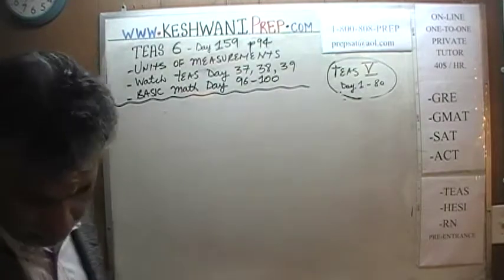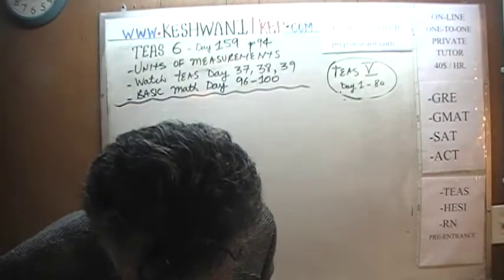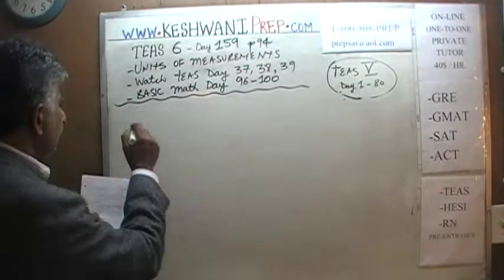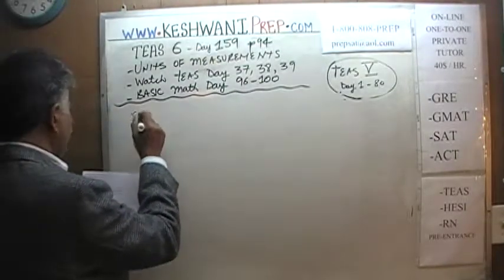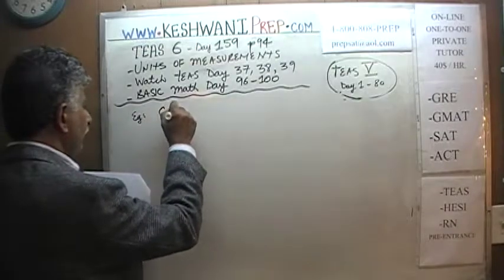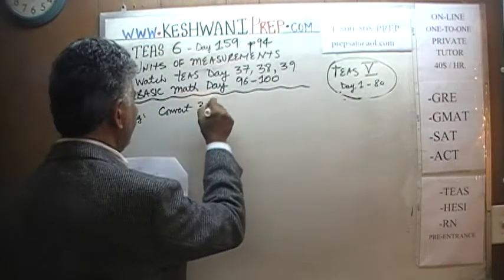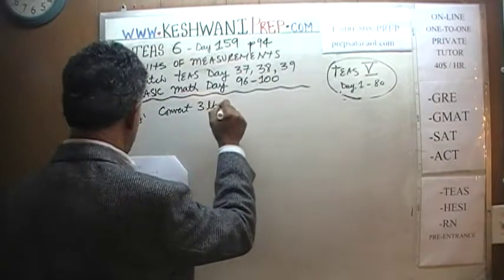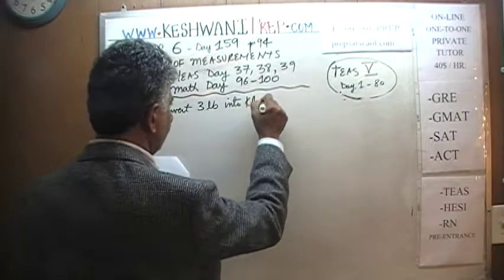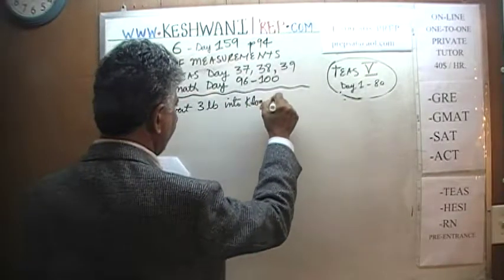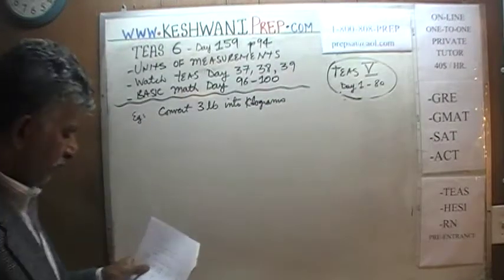This is an example from page number 94 where we are being asked to convert 3 pounds into kilograms. We have 3 pounds to start with, and the units we want to end up with are kilograms.